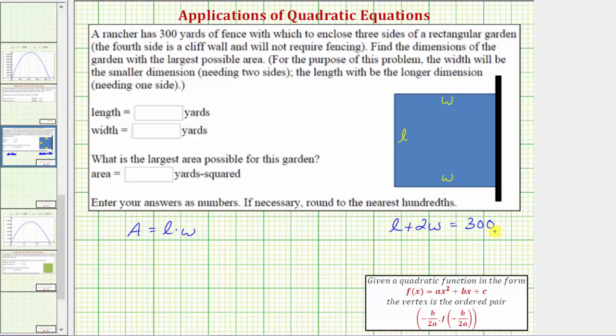To solve this equation for l, we'd subtract 2w on both sides. So l is equal to 300 minus 2w.